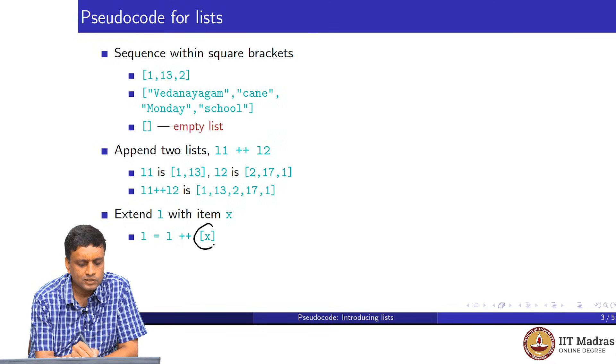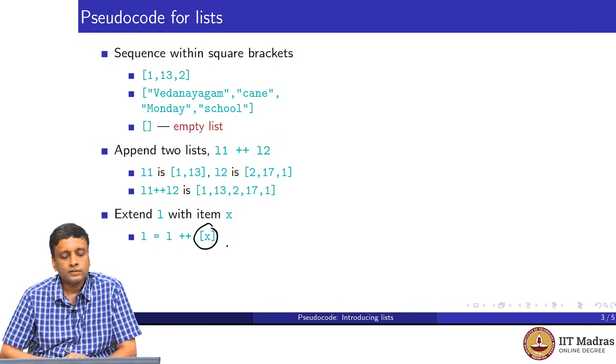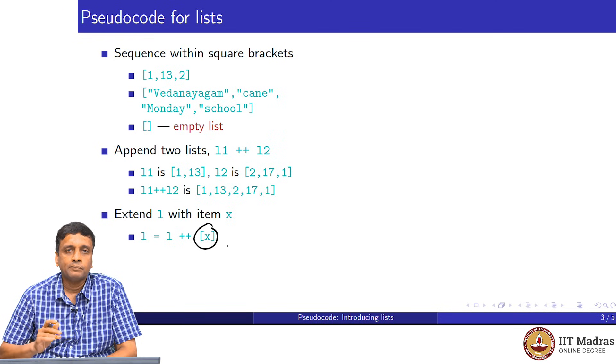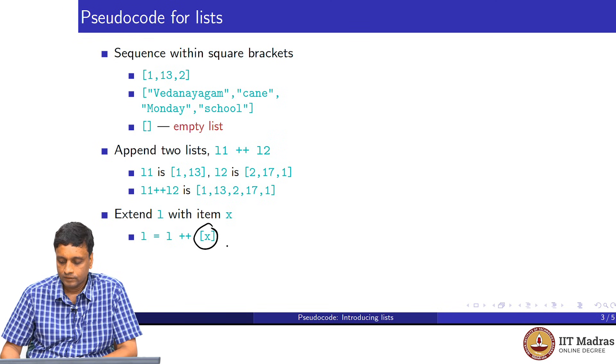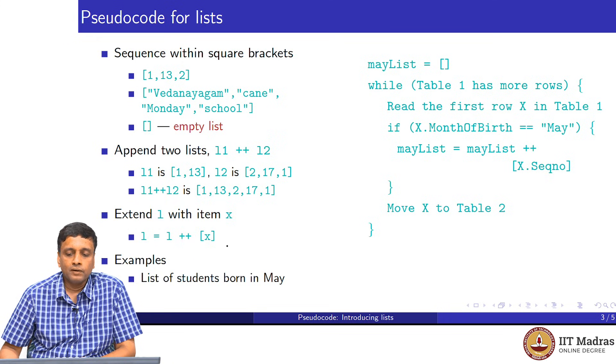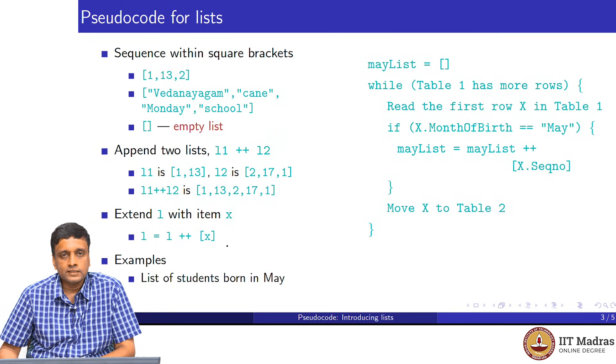An element on its own is not a list, but if we put it within square brackets, it becomes a list of size 1. We take L ++ square bracket x and this basically gives us a new list with one more element in it, namely x at the last position. ++ always remember adds to the right. As an example, here is a simple piece of pseudocode which uses this notation.